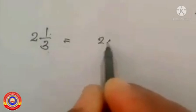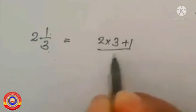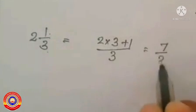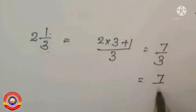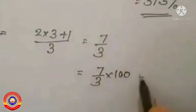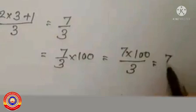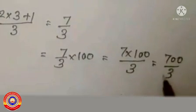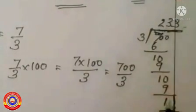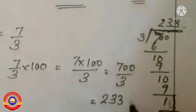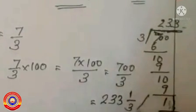Next question: 2 and 1 by 3. Convert 2 and 1 by 3 into an improper fraction, that is 2 into 3 plus 1 by 3. 2 into 3 is equal to 6, and 6 plus 1 is equal to 7. That is equal to 7 by 3. For converting 7 by 3 into percentage, multiply it by 100. 7 by 3 into 100 is equal to 7 into 100 by 3, that is equal to 700 by 3. On dividing 700 by 3 we get 233 and 1 by 3. Therefore 7 by 3 is equal to 233 and 1 by 3 percentage.